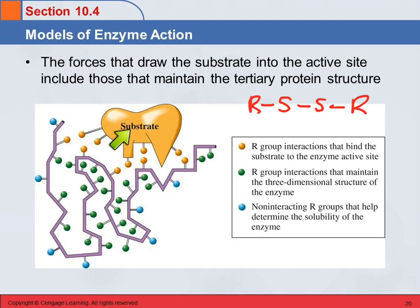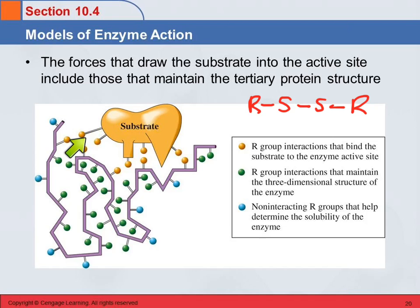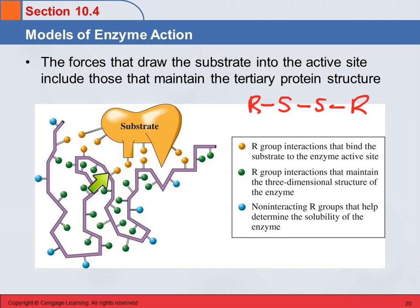The substrate has the right shape to come in and have all these interactions line up — it might have a hydrogen bond here, a nonpolar interaction there, and some polar interactions elsewhere. Another substrate where these interactions don't line up won't fit. Or if the shape is such that it can't get into the crevices and bind with those side groups, that substrate won't fit either.